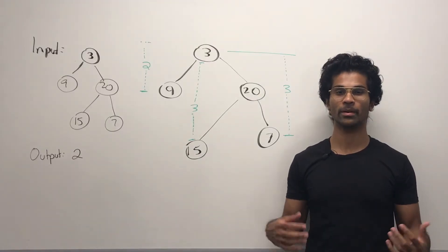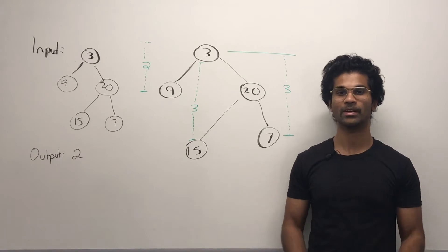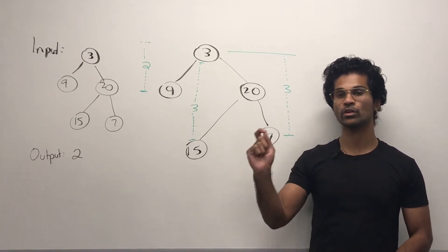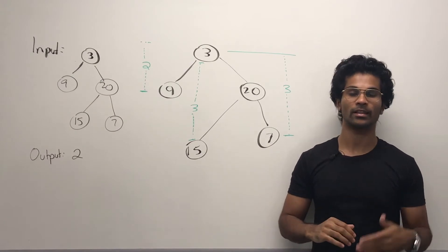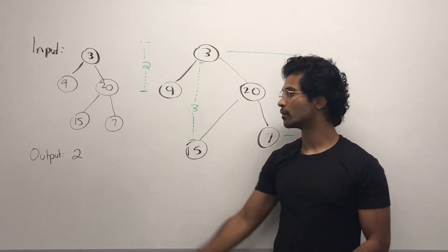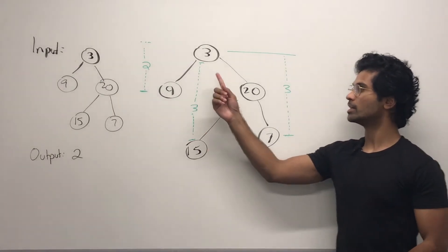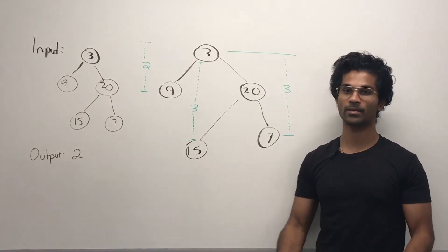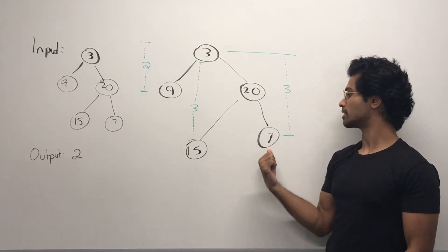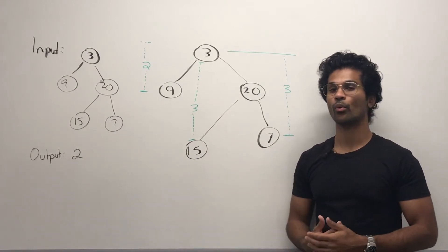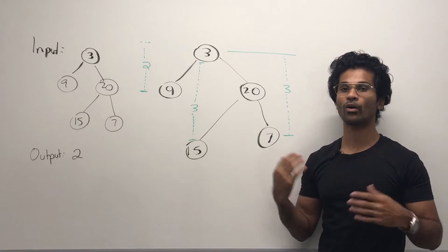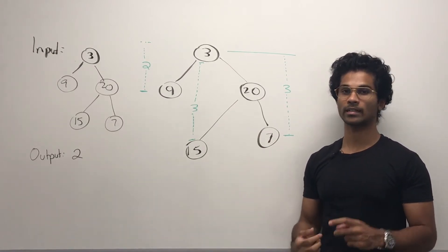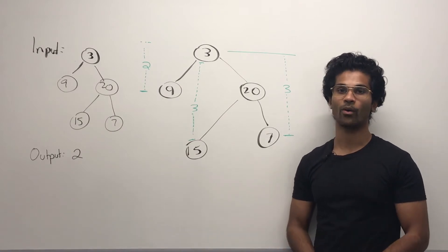The input is going to be a binary tree, and the output is going to be an integer. This integer represents the depth from the root node to the nearest leaf node. So for this example, if 3 is the root, 3 to 9 has a depth of 2, 3 to 15 has a depth of 3, and 3 to 7 has a depth of 3. We want the minimum out of all such depths that go from the root to all the leaf nodes. So in this case it's 2, and that's going to be our output.